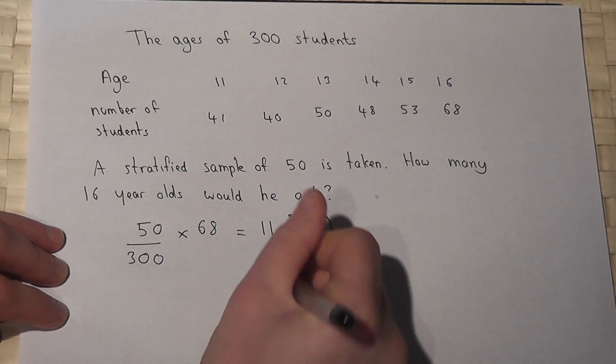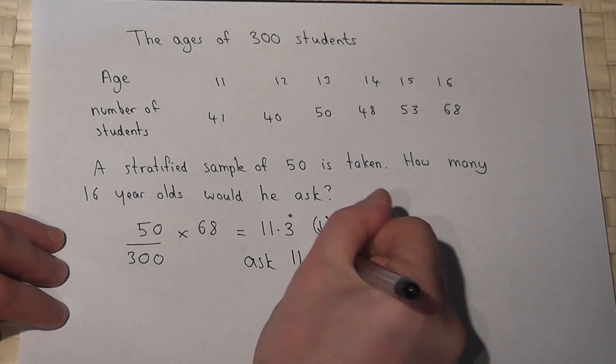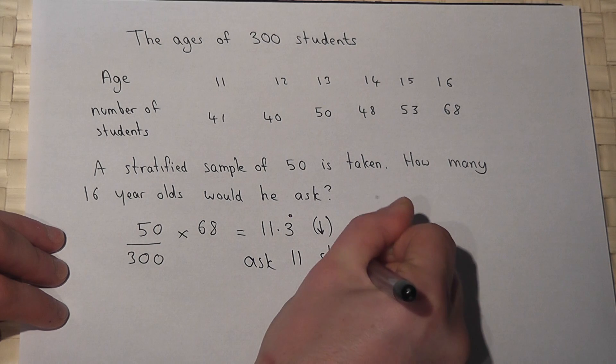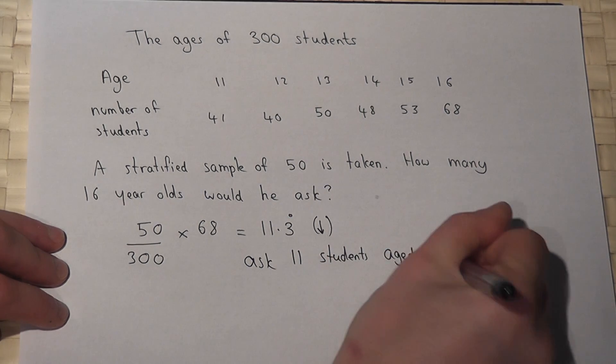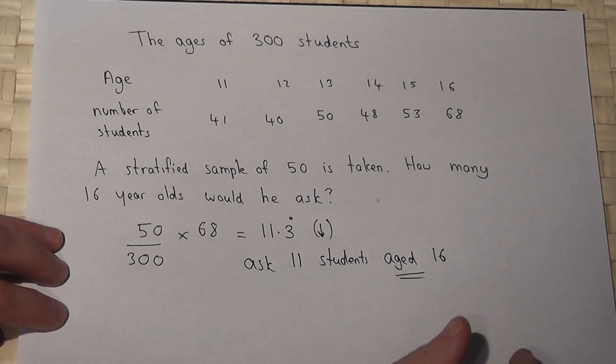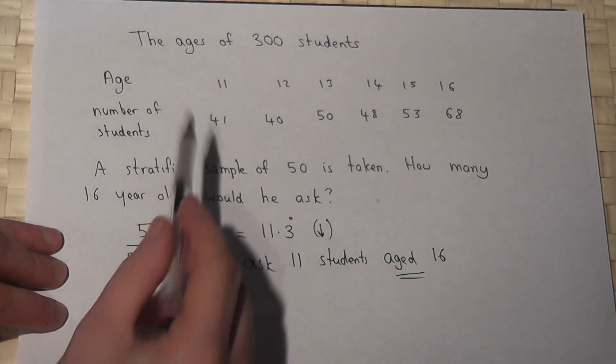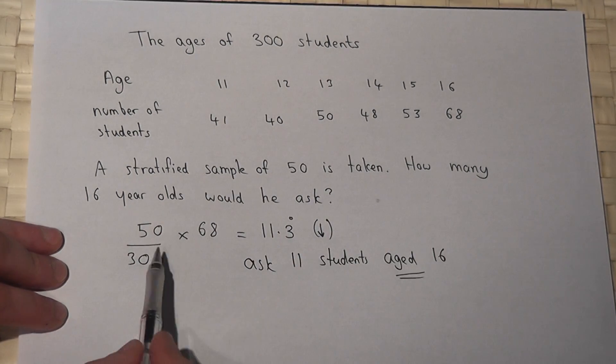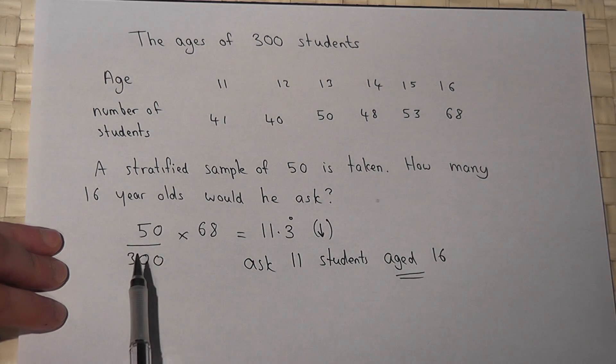Let's ask 11 students aged 16. This method would be used for all the different groups, so we times each of the groups by this fraction to work out the number of pupils asked per group.